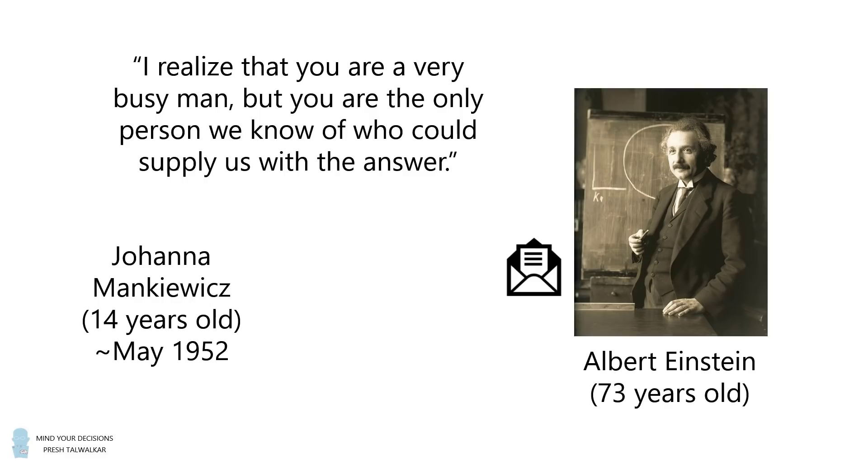Unknown to Johanna is that Albert Einstein would occasionally write back to students who he felt were sincere, so he wrote back to Johanna. He didn't solve the problem exactly, but he did provide some hints and a general method for solving these kinds of problems.